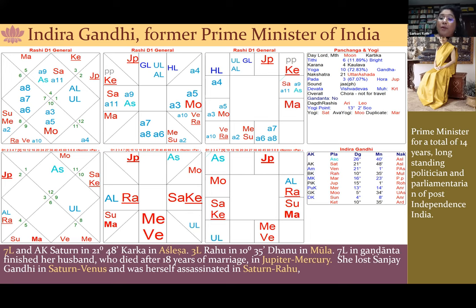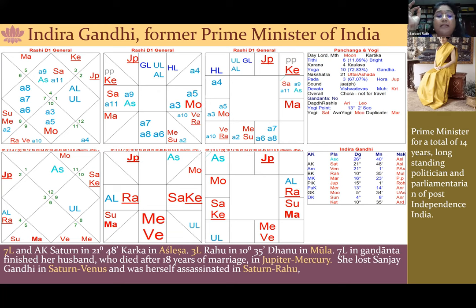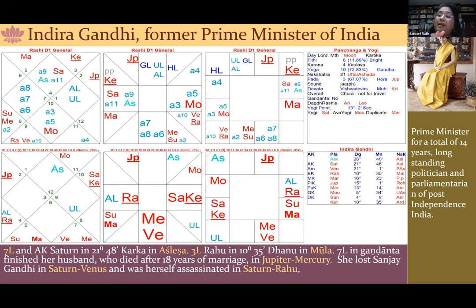Her husband died in Jupiter-Mercury dasha. She lost her son Sanjay Gandhi in Saturn-Venus dasha from the air crash. She herself was assassinated in Saturn-Rahu — she was in her own house when two security guards shot her down. They were Sikhs, retaliating for Operation Blue Star in the Golden Temple, considered a major sacrilege. So Saturn caused the death of her son and her own assassination. Ketu is neecha in the 12th house, and Mercury is in the fifth house. Either Mercury and Ketu created a problem — here the seventh lord in Gandanta caused the loss of her husband, her son, and finally herself.